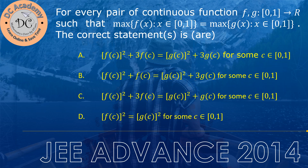In this video we're going to solve a problem which appeared in G-Advance 2014. It's given that for every pair of continuous functions f and g satisfying the relation that the maximum of f(x) and the maximum of g(x) are always equal when x lies inside the interval 0 to 1. We have to test which option is correct. This is a problem where we analyze based on the options provided.